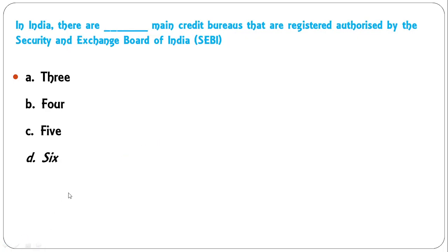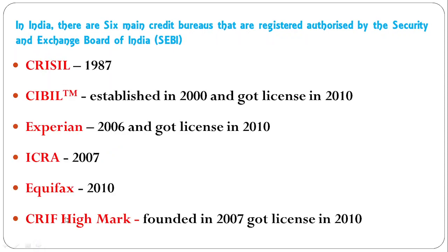In India there are how many main credit bureaus registered and authorized by SEBI: three, four, five, or six? There are six credit bureaus authorized by SEBI, so D is the correct answer. The six credit bureaus are CIBIL, Experian, CRIF High Mark, Equifax, and others, along with the dates when each was incorporated and established.